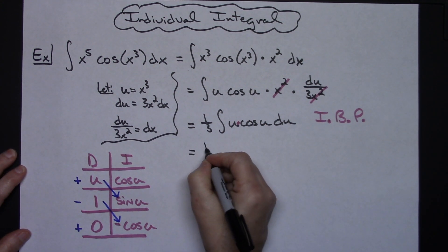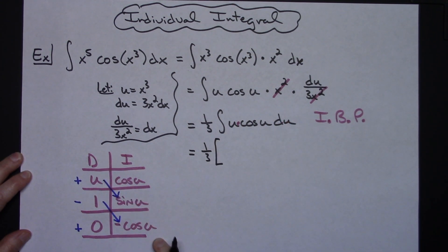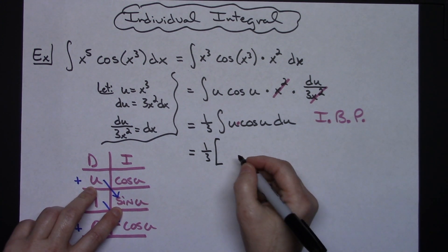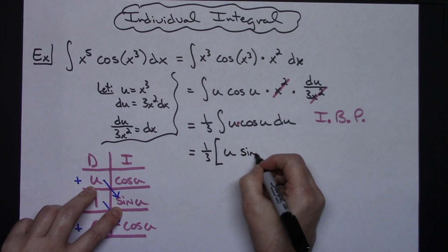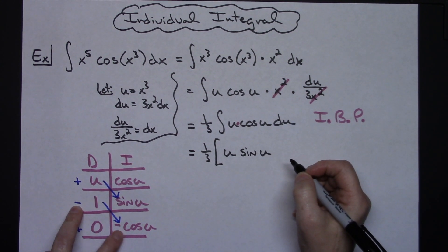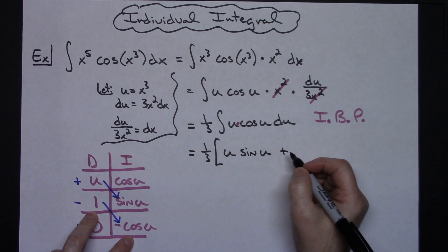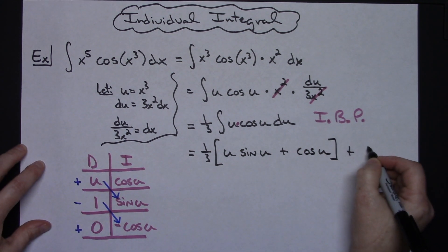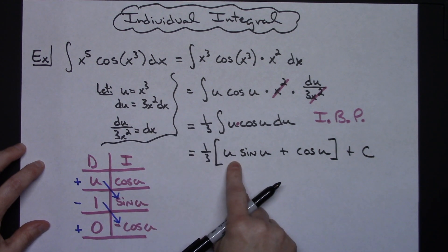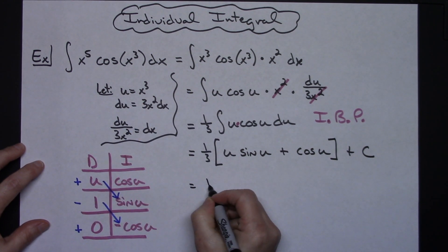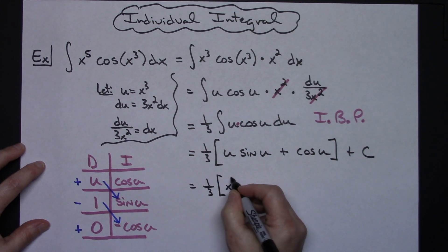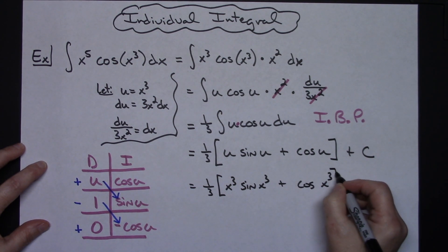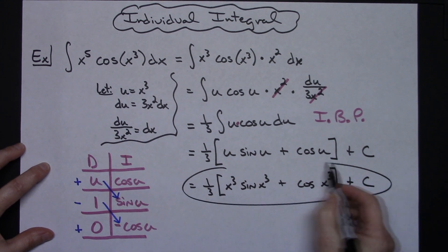The one-third is still out front. Multiplying across the diagonals from the shortcut: u times sine u gives u sine u, and then negative times negative gives positive, so 1 times cosine u gives plus cosine u. Adding the constant of integration and substituting back u equals x to the third, the final answer is one-third times the quantity x to the third sine x to the third plus cosine x to the third, plus C.